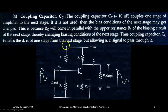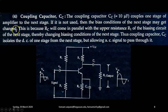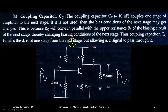Next is coupling capacitor CC. The coupling capacitor CC, with a typical value of approximately 10 microfarad, couples one stage of amplifier to the next stage. If it is not used, the bias conditions of the next stage may get changed. This is because RC will come in parallel with the upper resistance R1 of the biasing circuit of the next stage, thereby changing biasing conditions of the next stage. Thus, coupling capacitor CC isolates the DC of one stage from the next stage, but allowing AC signal to pass through it.